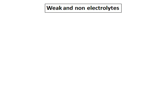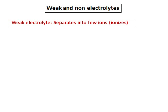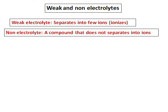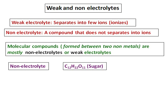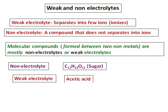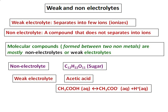Now let's look at weak electrolytes and non-electrolytes. Weak electrolytes separate into only a few ions, while non-electrolytes give no ions in solution. Molecular compounds — covalent compounds formed between two non-metals — are mostly non-electrolytes or weak electrolytes. For example, sugar is a non-electrolyte, while acetic acid is a weak electrolyte. Acetic acid ionizes to give acetate and H+ ions, but the double arrow indicates the ions can recombine back to the acid.